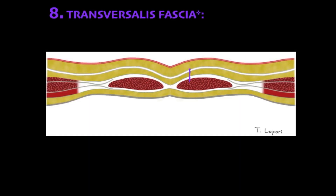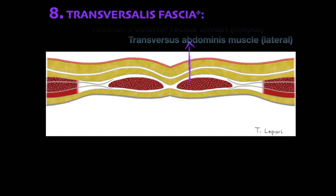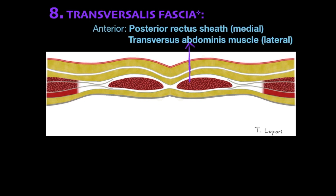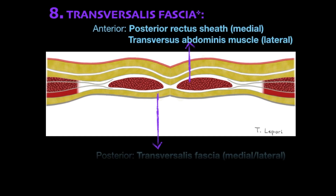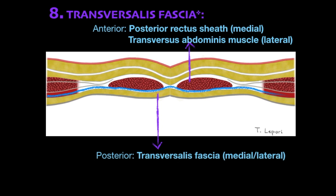The transversalis fascial plane is formed anteriorly by the posterior rectus sheath and transversus abdominis muscle, and posteriorly it is composed of the transversalis fascia, both medial and lateral.